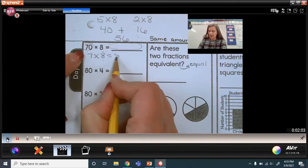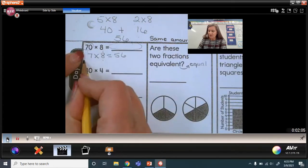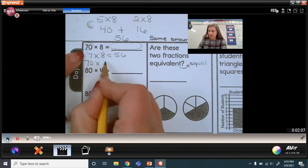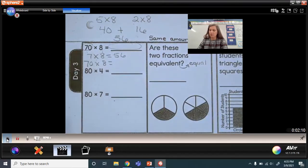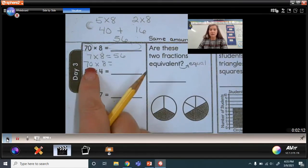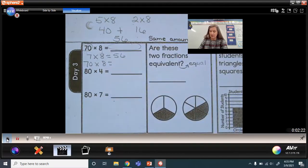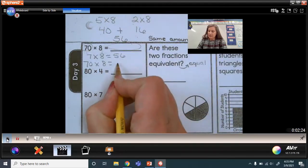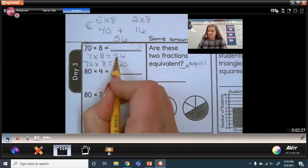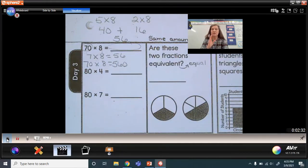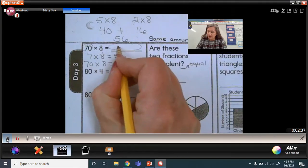That's for 7 times 8. Now with 70 times 8, I'm multiplying by a multiple of 10, which tells me that I'm going to multiply 56 by 10, which makes my place value 10 times greater. So 6 times 10 would be 60 and 50 times 10 would be 500. So I'm going up one more place value whenever I multiply by 10. So this would be 560.